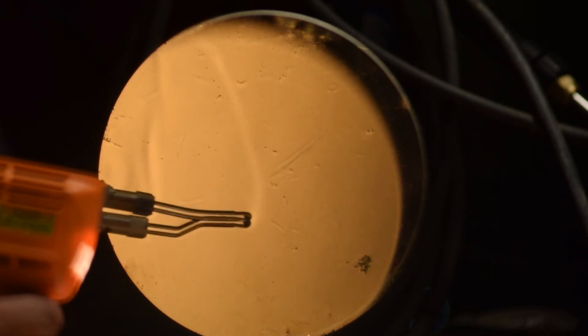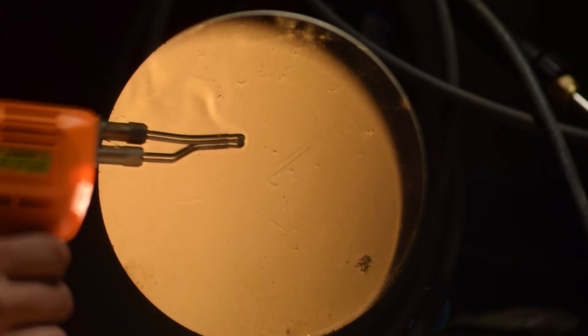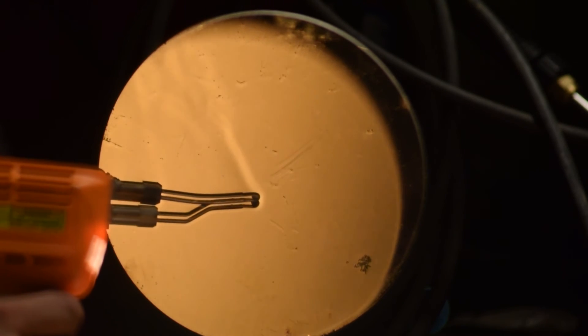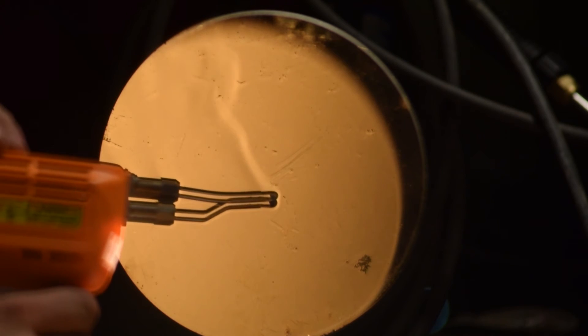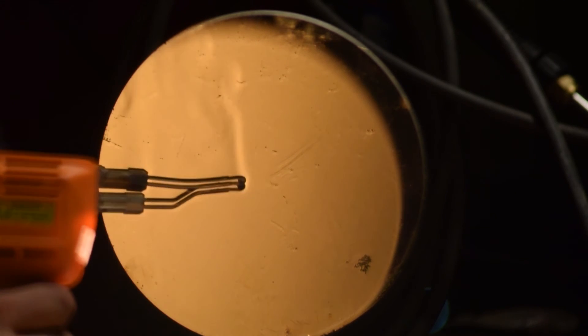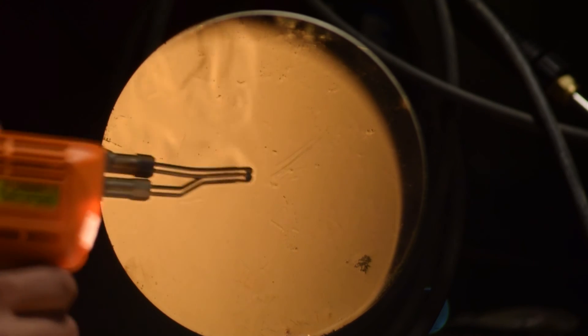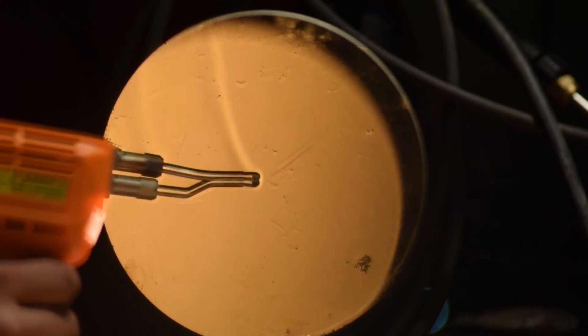So again, this is the Schlieren effect. I'll post up some pictures showing the setup on how it works, but it is a great way to visualize not only heat, but also shock waves. This is used to show whip shock waves, airplane shock waves, things like that - basically micro air currents, things happening in the air that are invisible to the naked eye. That is the Schlieren effect. Thanks for watching.